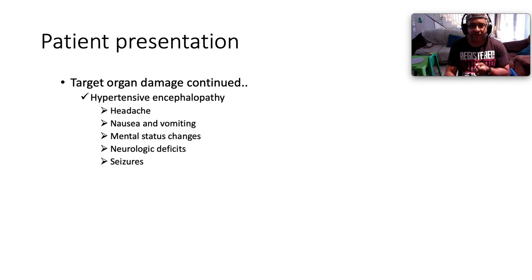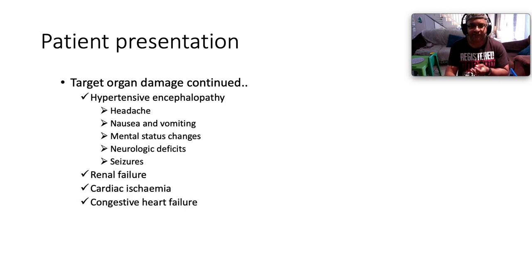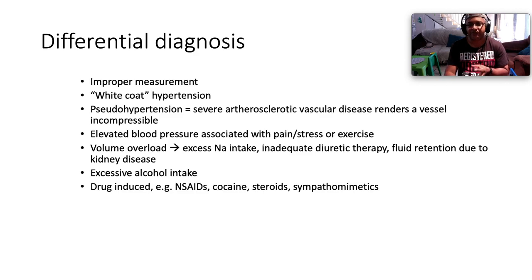Other forms of target organ damage include hypertensive encephalopathy — with headache, nausea, vomiting, mental status changes, seizures, and neurological deficits — as well as kidney injury leading to renal failure, cardiac ischemia, and congestive heart failure.